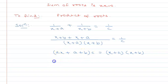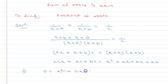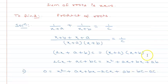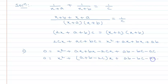Cross-multiplying: c(2x + a + b) = (x+a)(x+b), so 2cx + ac + bc = x² + ax + bx + ab. Rearranging to 0 = x² + ax + bx - 2cx + ab - bc - ac. Simplifying, this becomes x² + (a + b - 2c)x + (ab - bc - ac) = 0. This is a quadratic equation, and the sum of roots...